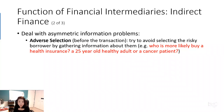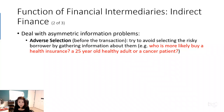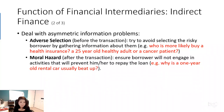How can financial intermediaries avoid the damage created by asymmetric information? What banks typically do is try to avoid selecting risky borrowers by gathering information about them. Financial intermediaries will spend a lot of money doing background checks and looking at the credit history of borrowers to determine whether they should lend them money. This is one major risk facing financial intermediaries. The second type of asymmetric information problem is called moral hazard, which happens after people borrow the money.